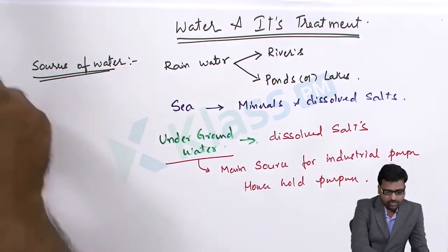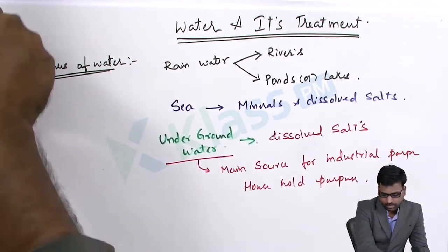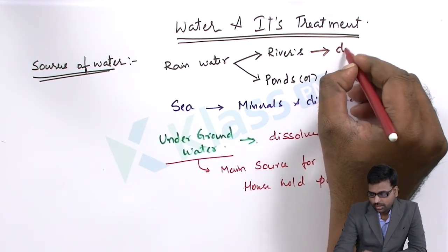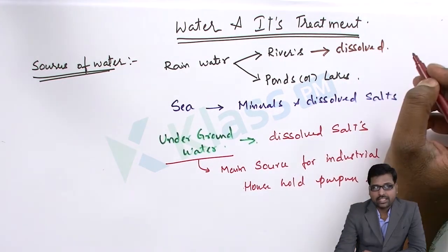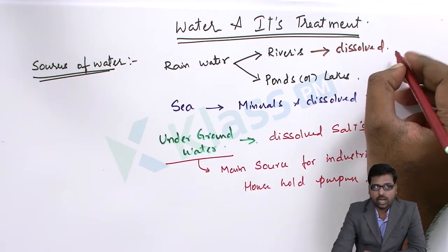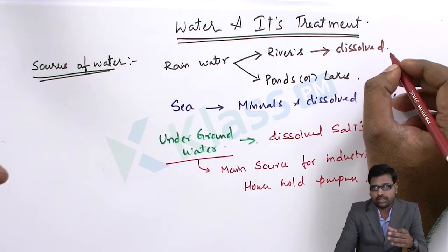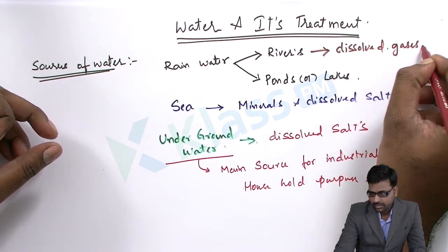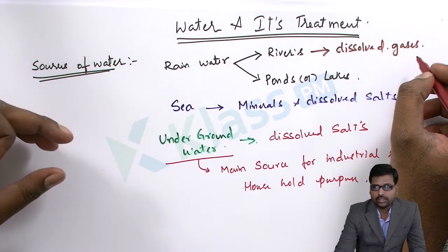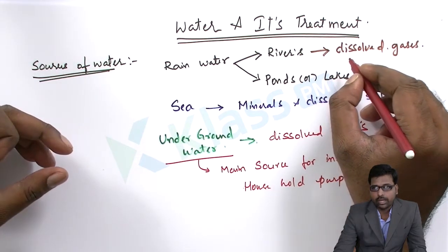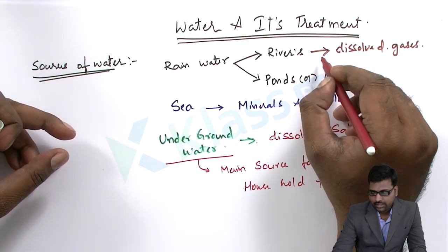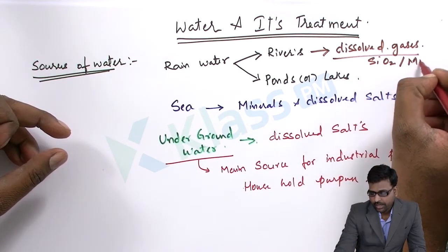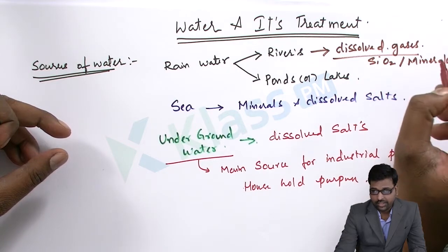Rainwater can be used and it contains mainly dissolved gases, because as the rainwater comes from the clouds it takes up solids and gases, forming dissolved gases. After reaching the earth, it dissolves whatever salts it comes across in its journey as it overflows, like silica or any sort of minerals available on the surface of the ground.